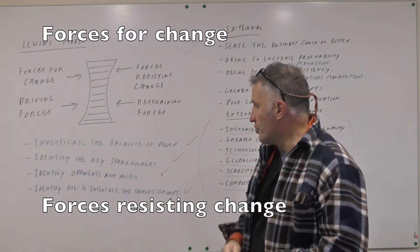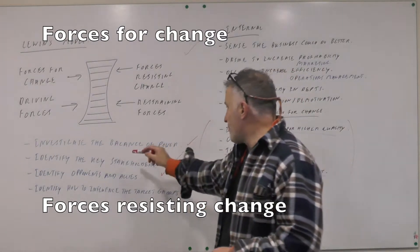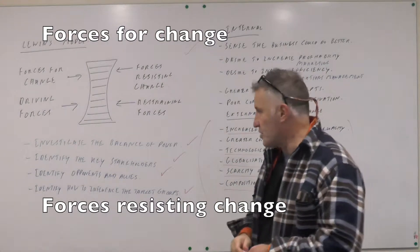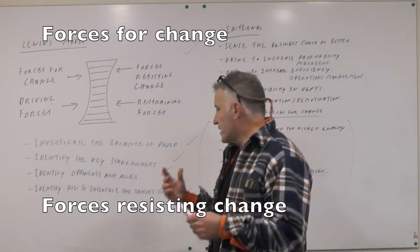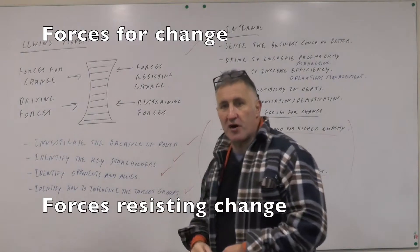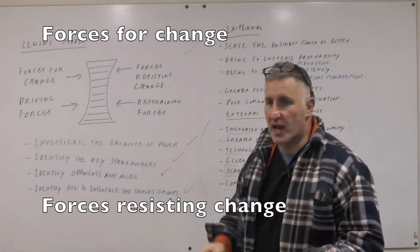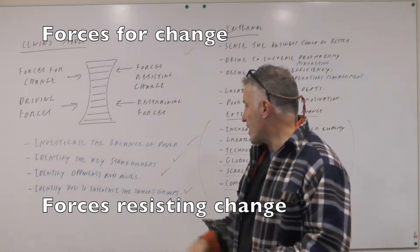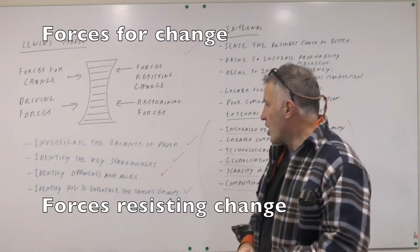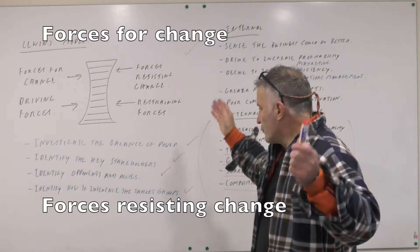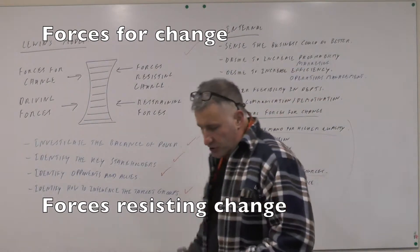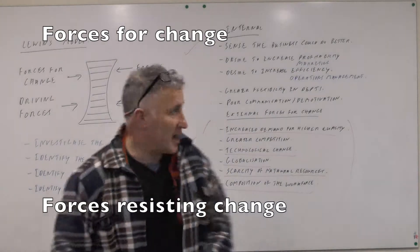When you look at this model, you need to investigate the balance of power. Who has the power within the organisation? Who are the key stakeholders within the organisation? You need to identify the opponents and the allies of change, and how to influence the target groups. These are all factors that you need to consider when looking at change.